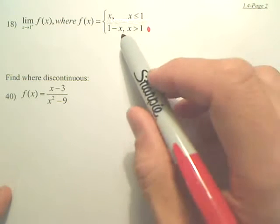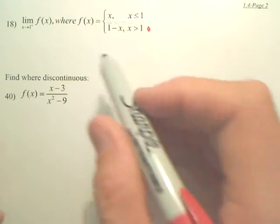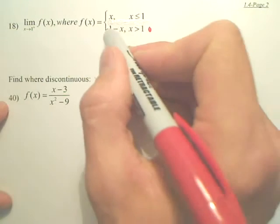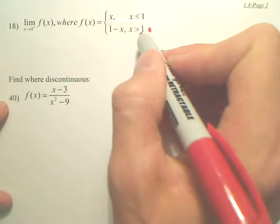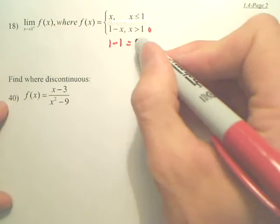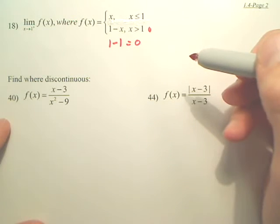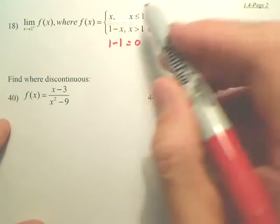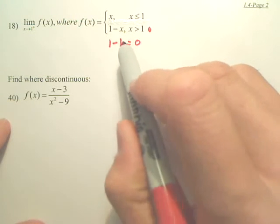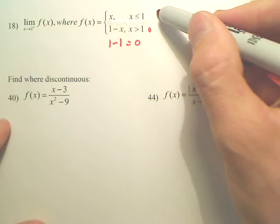Now let's first just find the output, because it's the output from the positive side. For this one, you're just going to plug in 1. What's 1 minus 1? 0. So for the bottom you get 0. But for the top, what do you get when you plug in 1? 1.